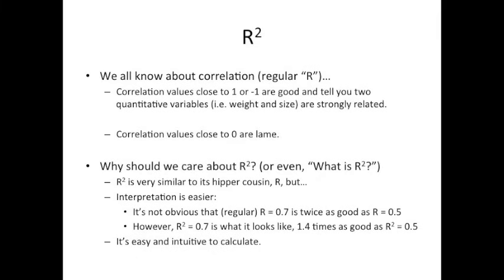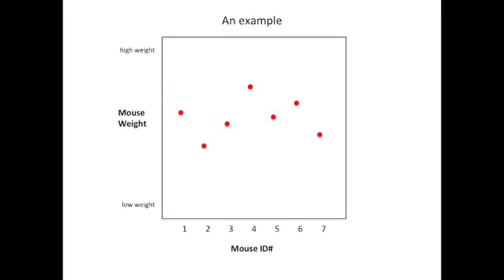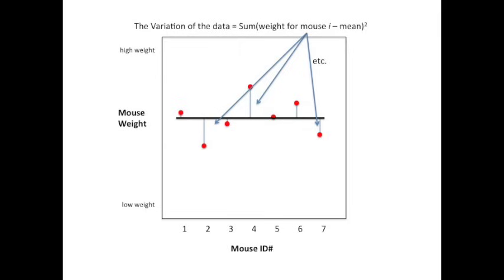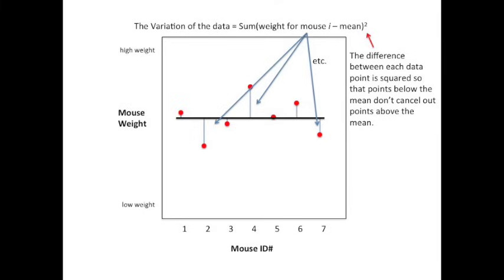The other thing that I like about R-squared is that it's easy and intuitive to calculate. Let's start with an example. Here, we're plotting mouse weight on the y-axis — with high weights towards the top and low weights towards the bottom — and mouse identification numbers on the x-axis with ID numbers 1 through 7. We can calculate the mean or average of the mouse weights and plot it as a line that spans the graph. We can calculate the variation of the data around this mean as the sum of the squared differences of the weight for each mouse i, where i is an individual mouse represented by a red dot, and the mean.